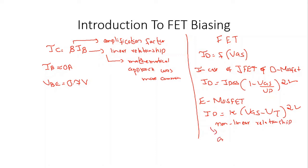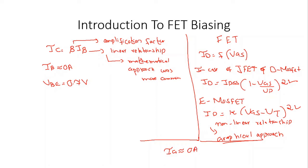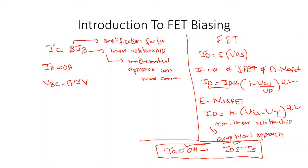Because of the non-linear relationship, the graphical approach is more common for FET analysis. We also note that due to the high input impedance and low power consumption of the FET, the gate current is approximately equal to zero amperes. This also means the drain current is approximately equal to the source current. For JFET and D-MOSFET, ID is found by the Shockley equation; for E-MOSFET, ID is found by the K-equation.